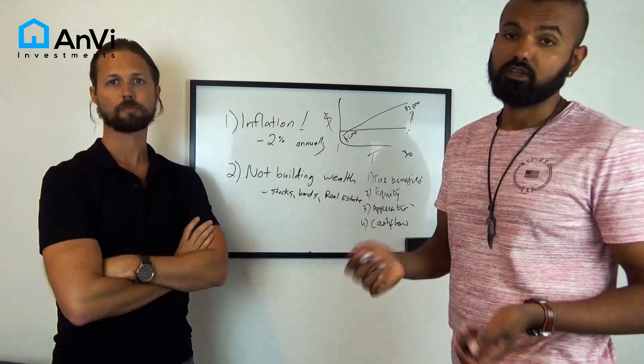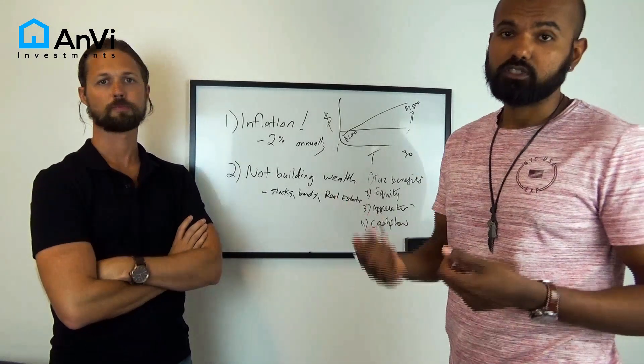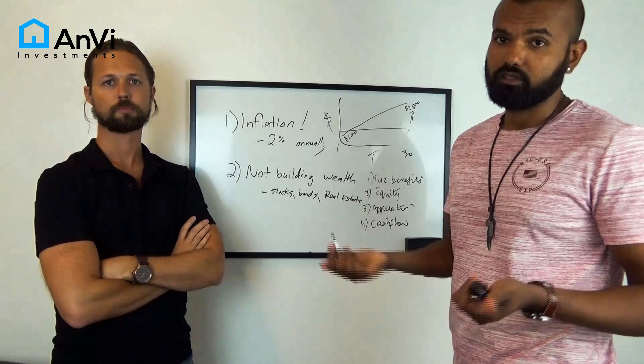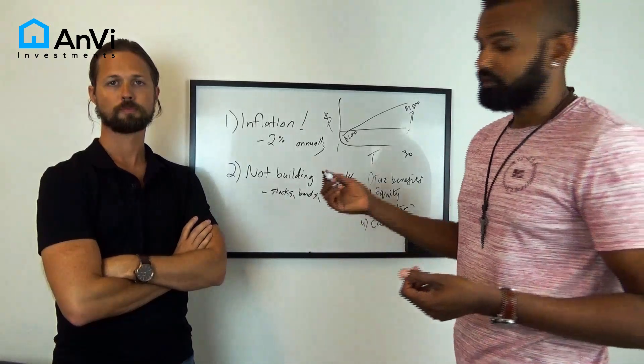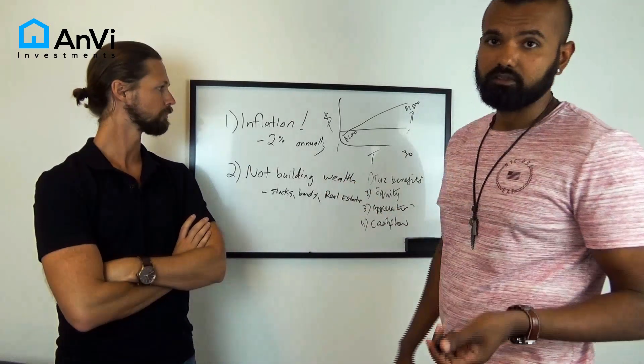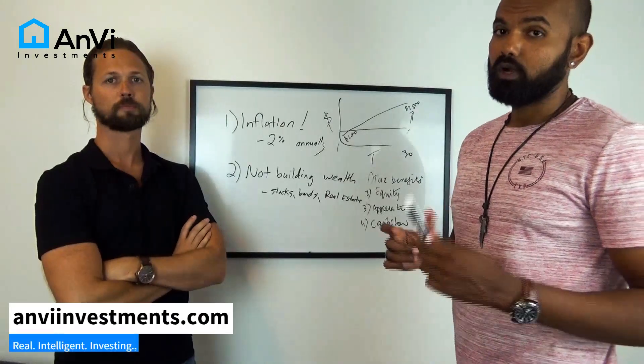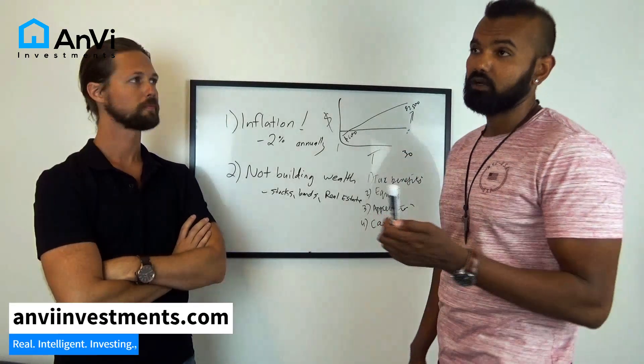There's different ways to calculate that. Very common is cash-on-cash ROI, which is cash-on-cash return on investment, which means you put $100 in, how much do you get back per year? If you put $100 in and you get $10 back, you get a 10% ROI.